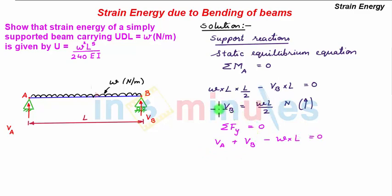Now substituting the value of Vb from this in this equation we get Va plus WL by 2 minus W times L equals 0. Therefore Va equals WL by 2. Again this whole term is positive, so our assumption is correct and the vertical support reaction Va is also upward.